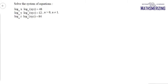The question is to solve the system of equations: log_a(x) times log_a(xyz) equals 48, log_a(y) times log_a(xyz) equals 12, and log_a(z) times log_a(xyz) equals 84.